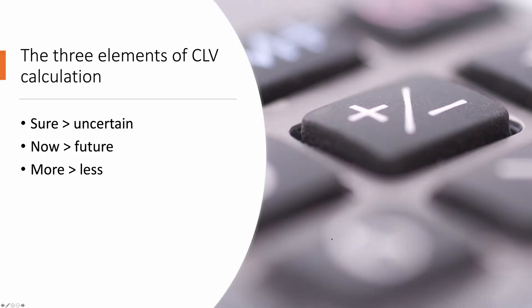When calculating CLV, there are three key elements. One: certain money is better than uncertain money. Second: money now is better than money in the future. And third: more money is better than less money.